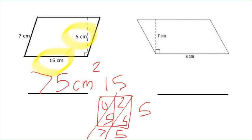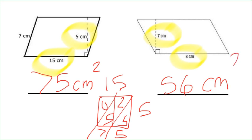For our next parallelogram, we're already given the base and the height. The base is 8 and the height is 7, so 8 times 7 is 56 centimeters squared.